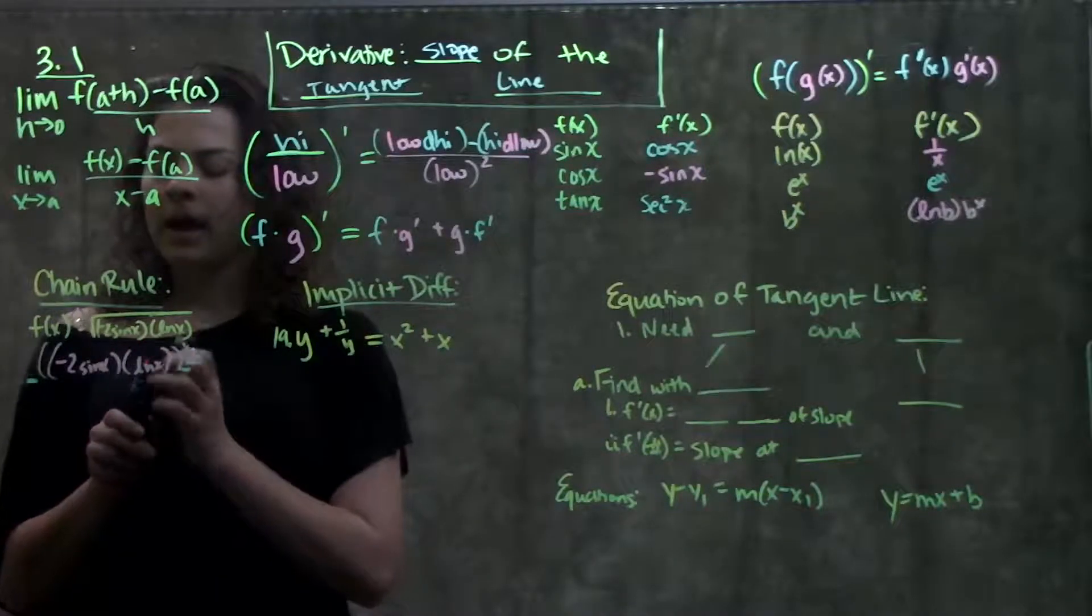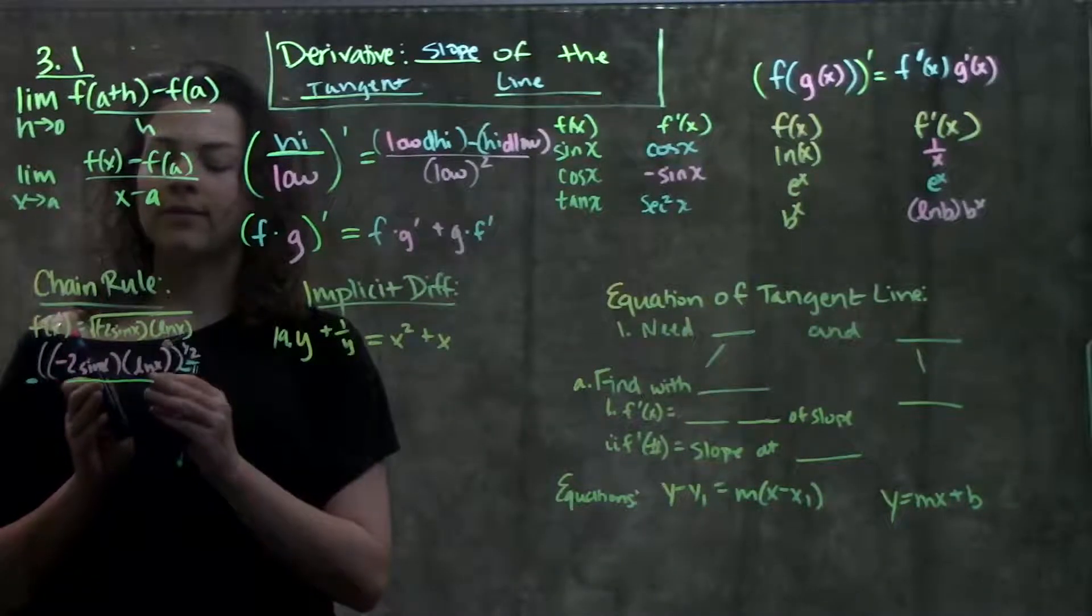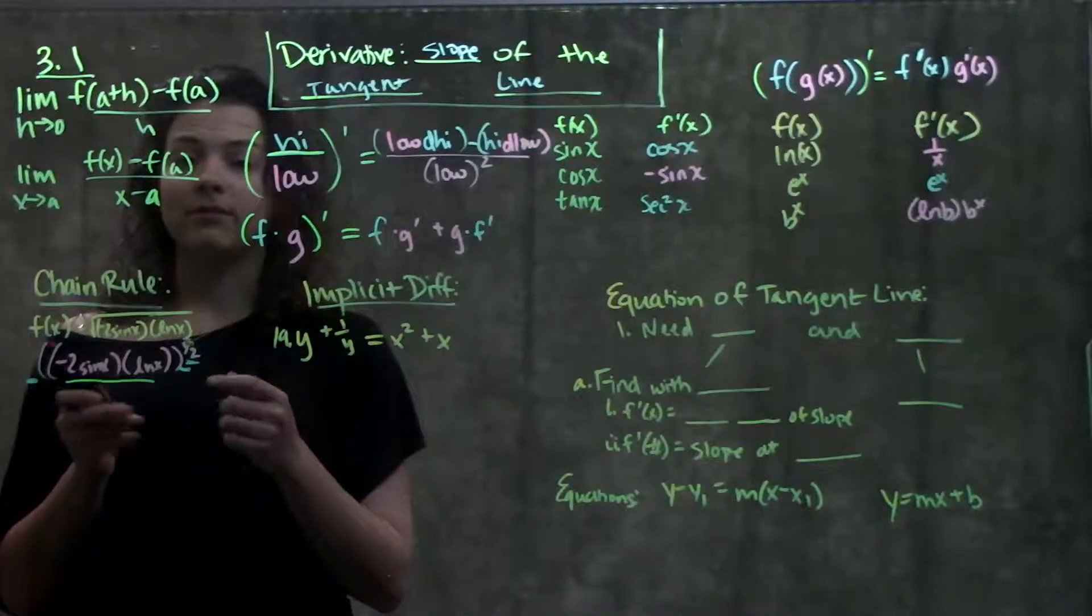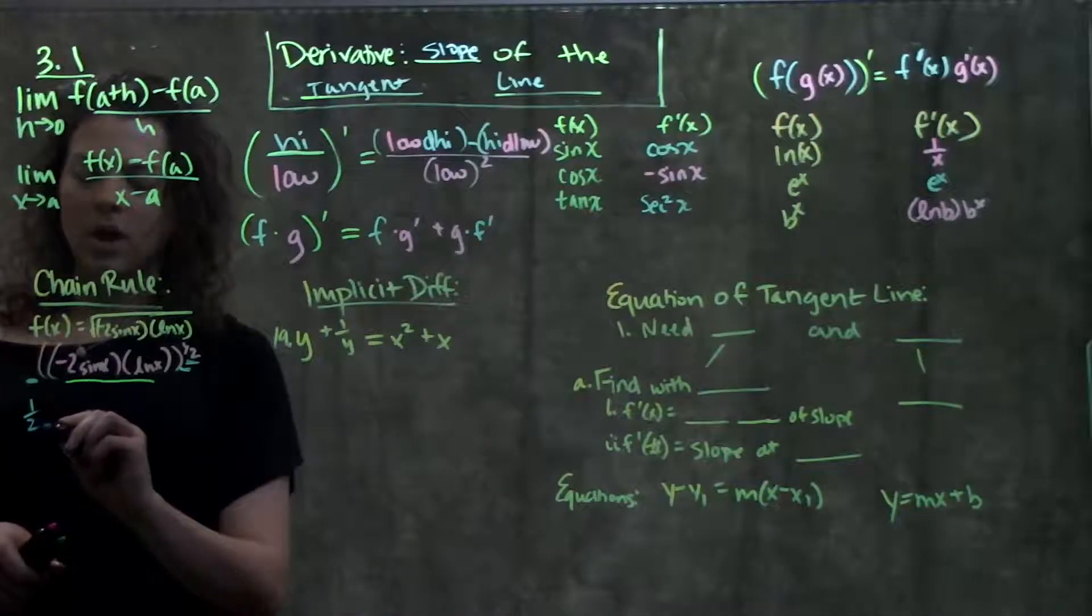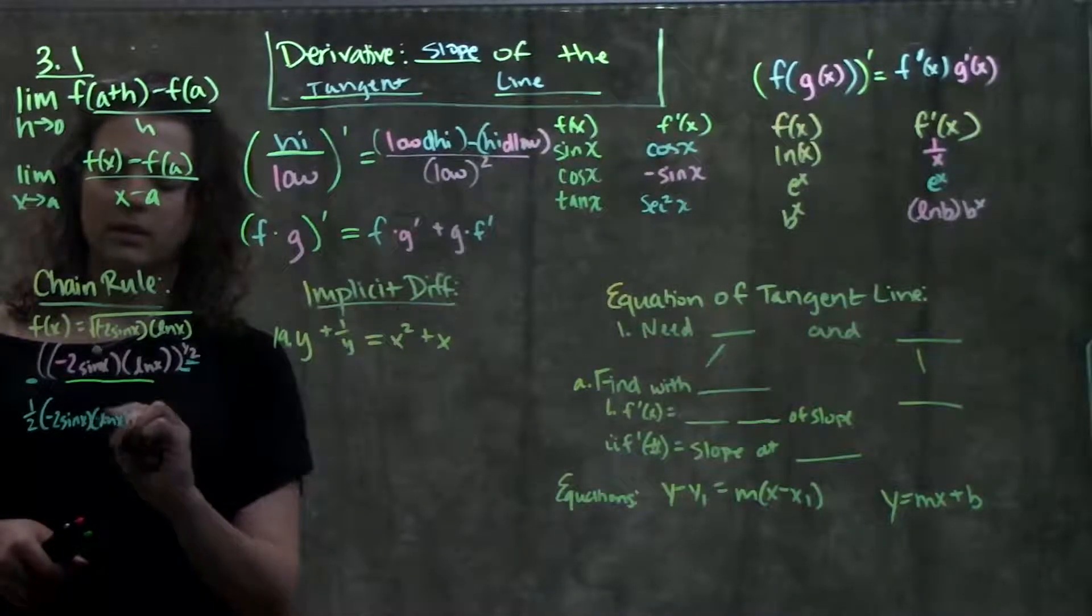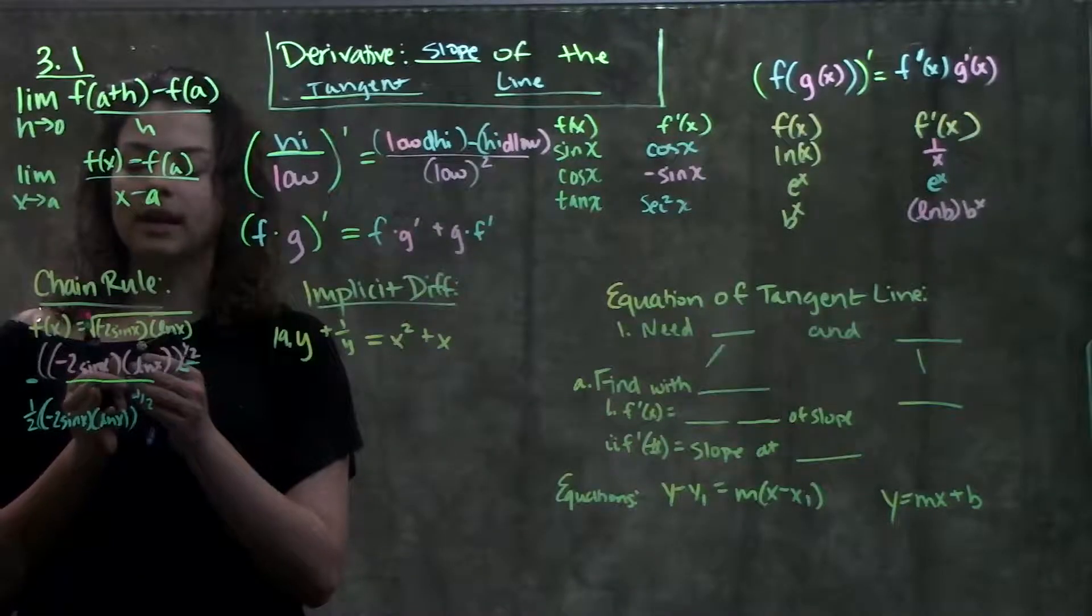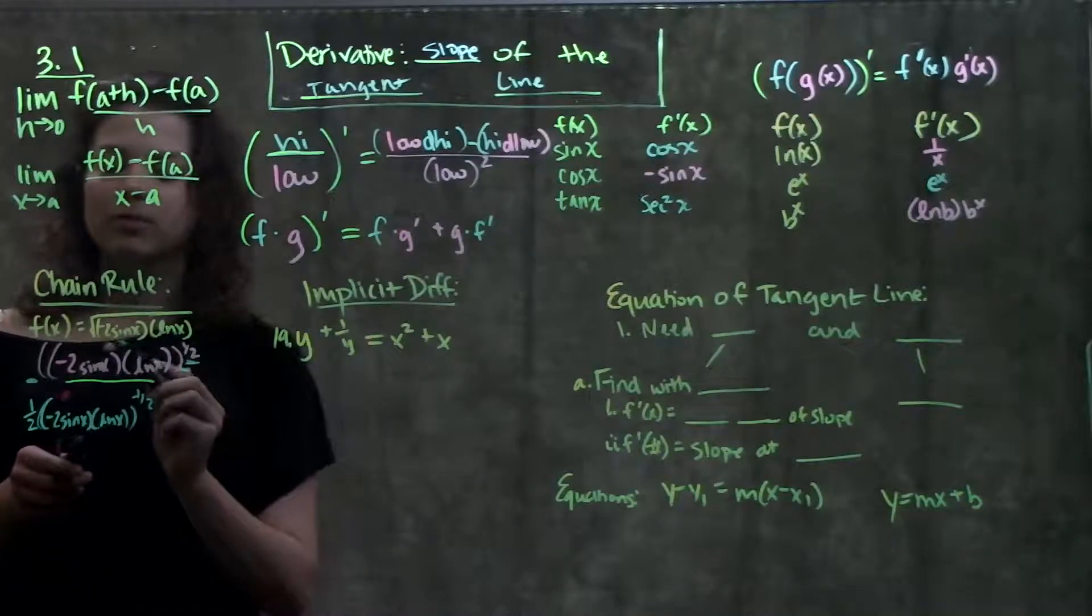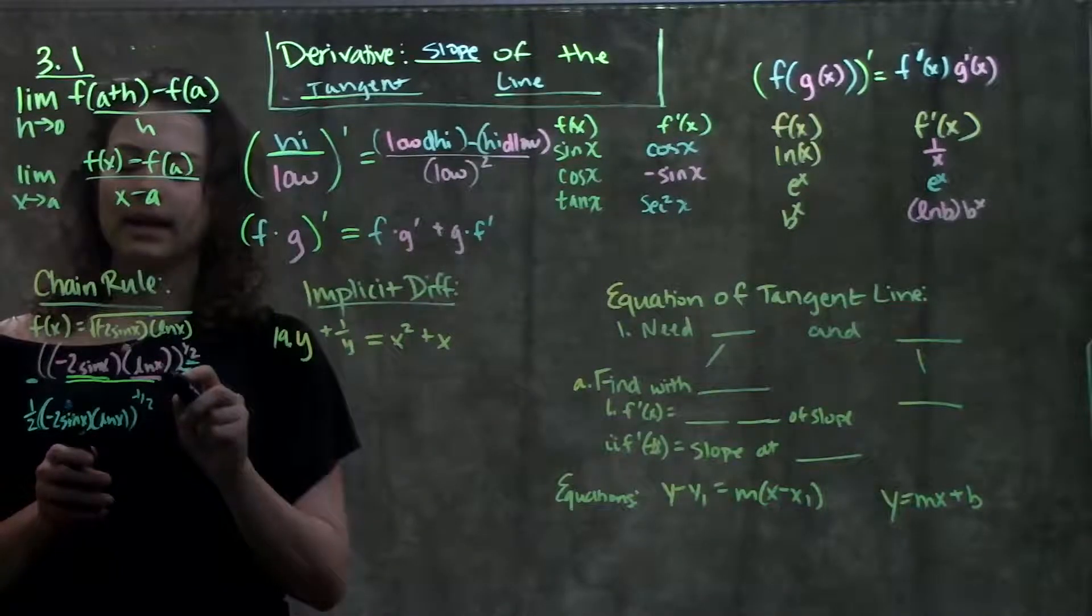My outside function here is something raised to the 1 half power. To take the derivative of something raised to the 1 half, I'll need to use my power rule. And now, moving on to my inside, I have negative 2 sine x times ln x. To take the derivative of this thing, I'll need to use my product rule. So starting with my outside function for chain rule, I get the derivative of something raised to the 1 half is using my power rule. 1 half times that same something, all raised to the negative 1 half.